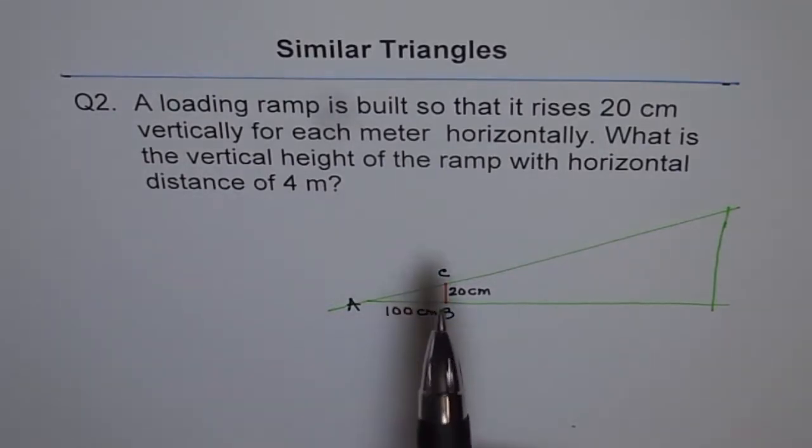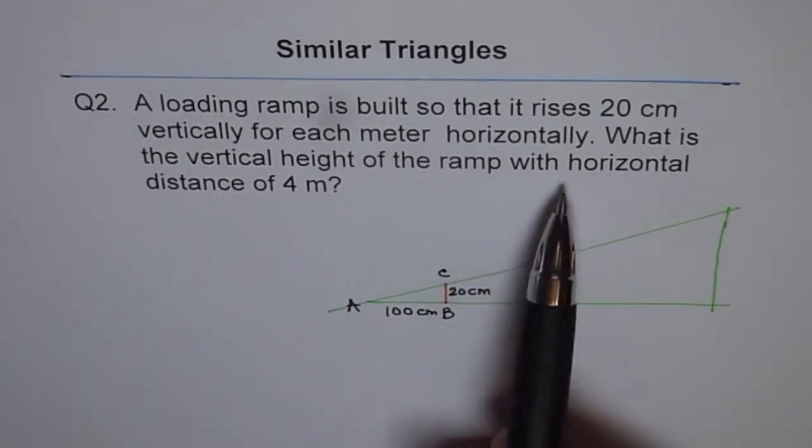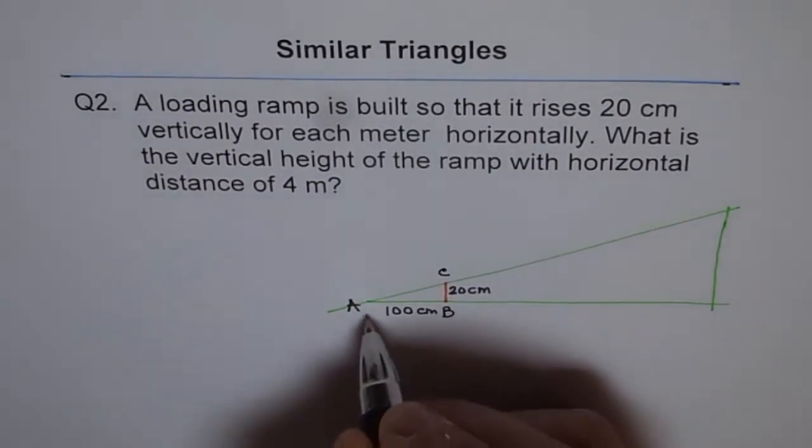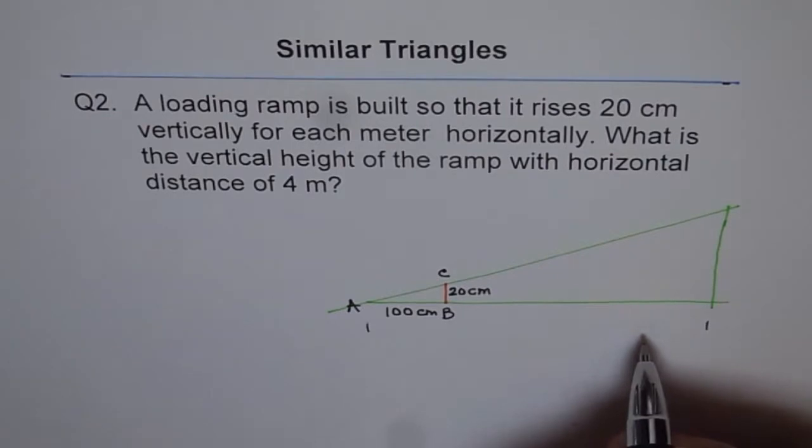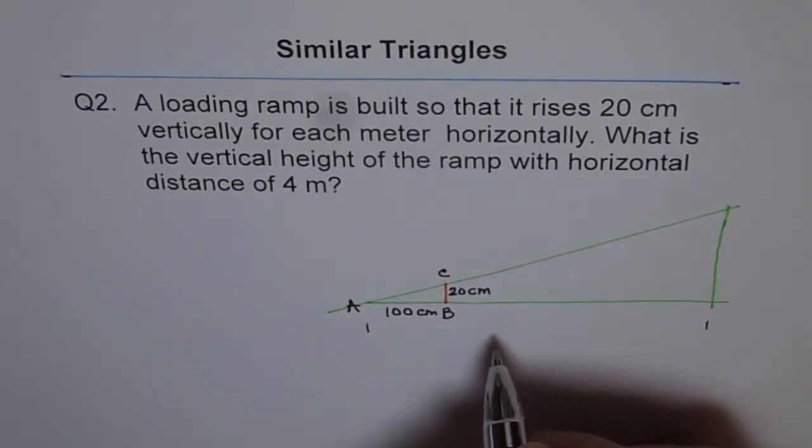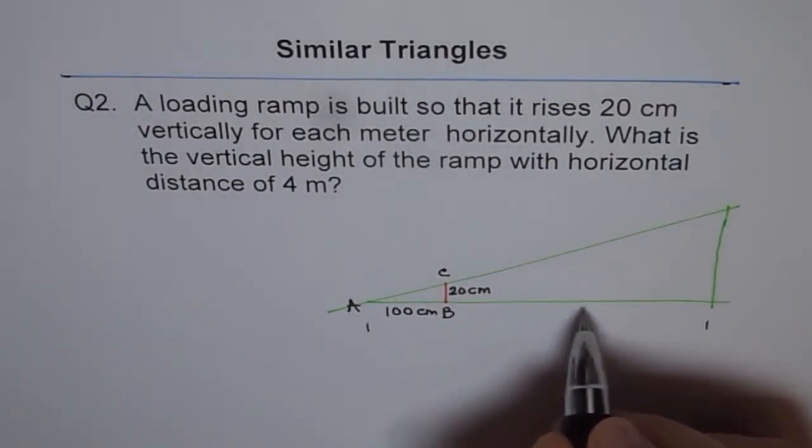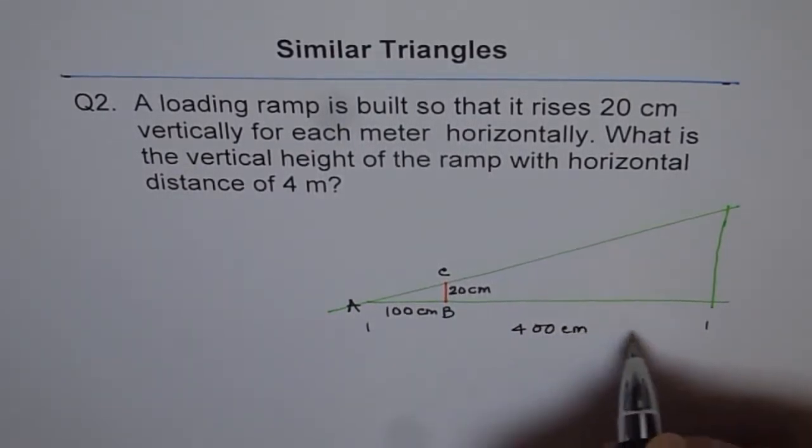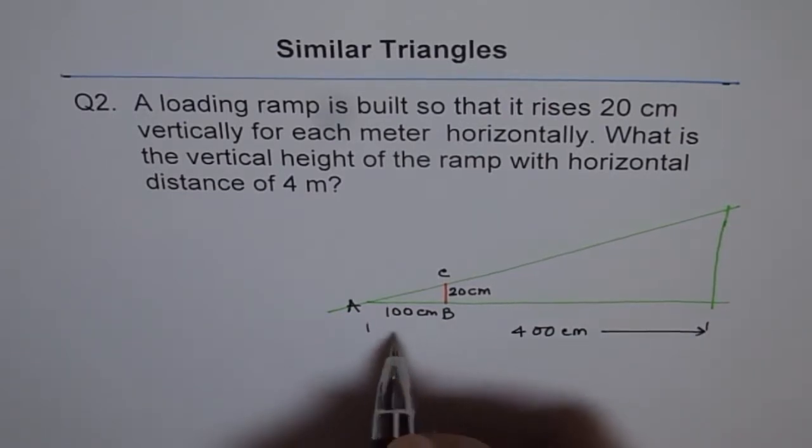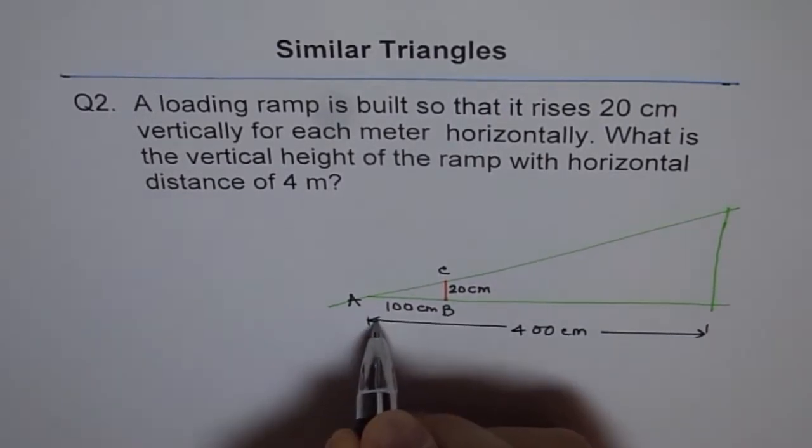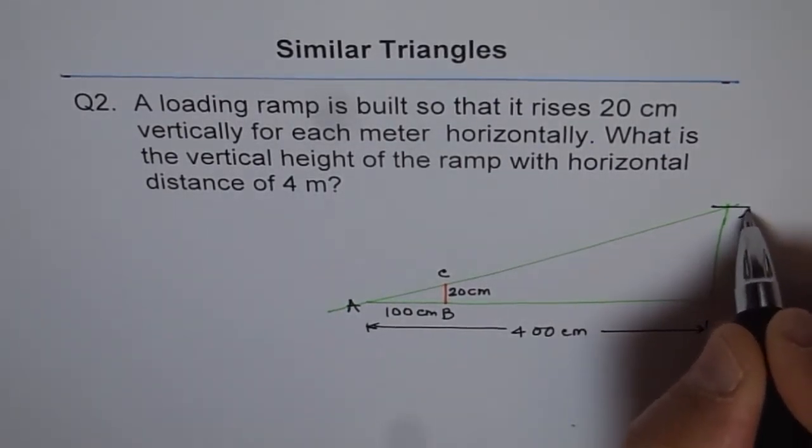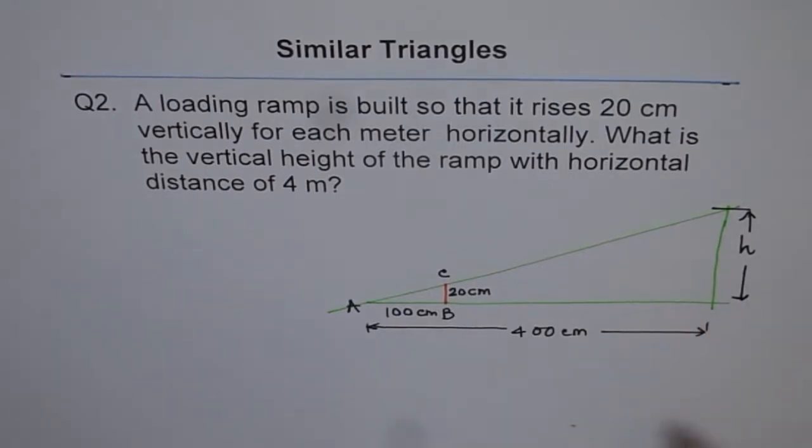Now it says, what is the vertical height of the ramp with horizontal distance of 4 meters? Let us say this distance is 4 meters. 4 meters means 400 cm. Let's write 400 cm. So if this is 400 cm, then what is the vertical height? What is this vertical height of the ramp? So that is the question. A sketch like this helps to understand the problem.